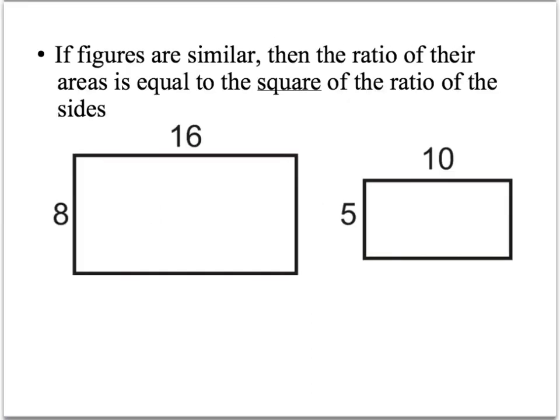The next thing, very similar to perimeter. The difference here is we're talking about area. It says if the figures are similar, then the ratio of the areas is equal to the square of the ratio of the sides. Now, this gets a little trickier, but still looking at ratios. Again, all we have to do is pick one side. Let's pick the easier one, 8 and the 5. If the figures are similar, then the ratio of the areas is equal to the square.